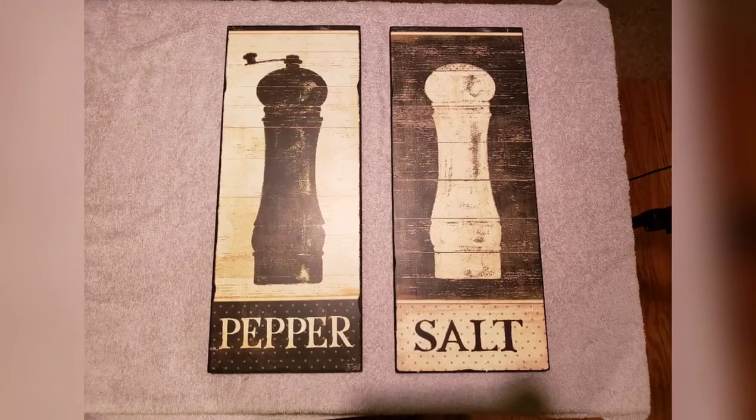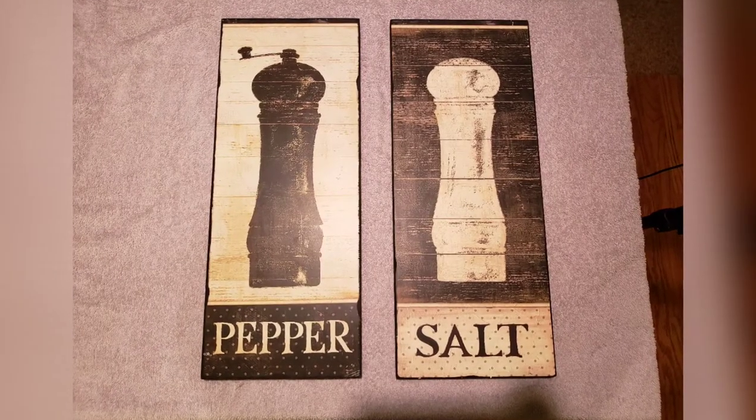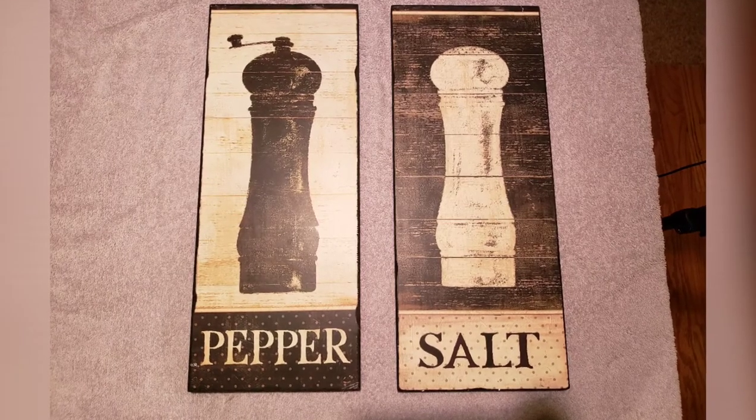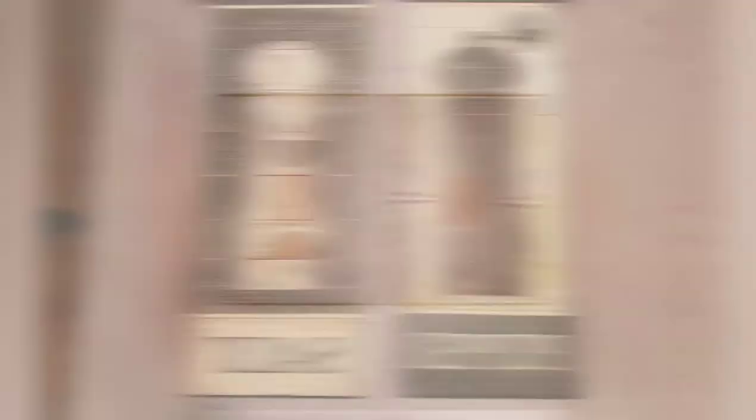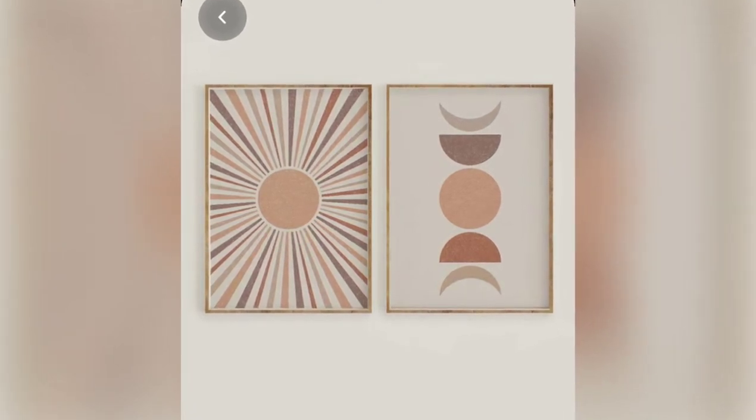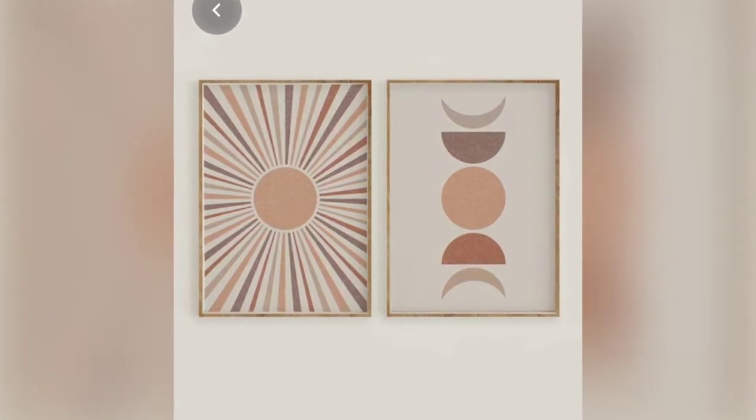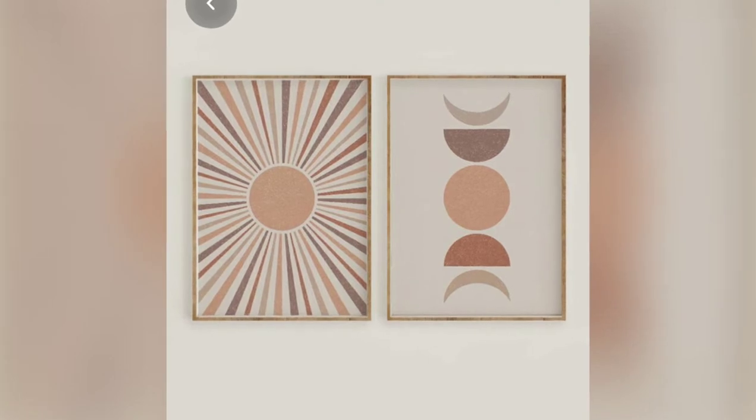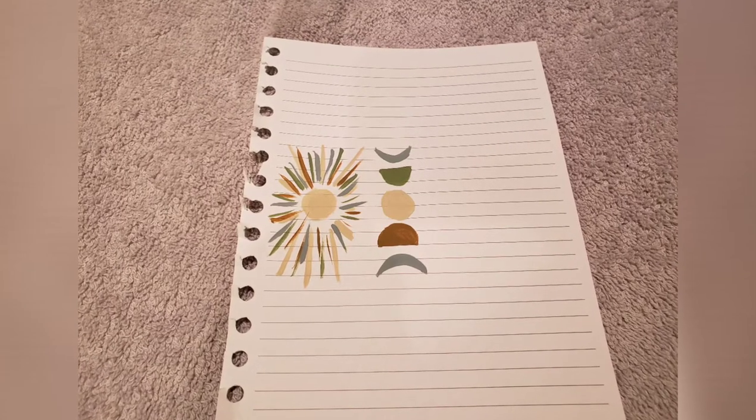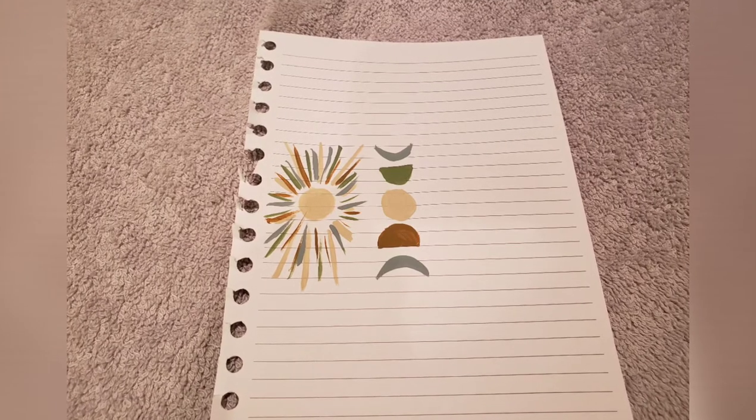Here is a quick photo of what they looked like before—they were just a little bit outdated salt and pepper shakers. And here is a picture of the pinspiration that I found. I'll link this down below for you. I really liked how the center of the sun and the moon were the same color, so I kind of sketched these out on a piece of paper to make sure I liked the colors that I wanted to use.